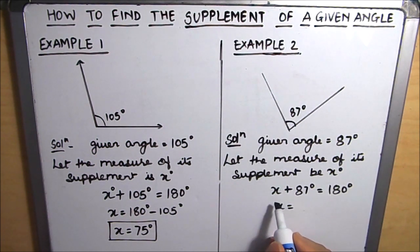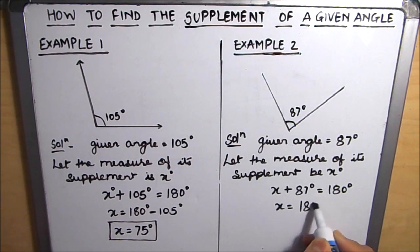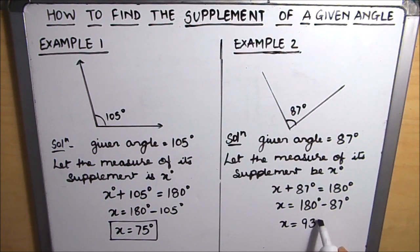We need to find the value of x here which is the supplement angle. So we will transpose 87 to the right hand side. This will become 180 degrees minus 87 degrees which is equal to 93 degrees. So this is our required supplement angle.